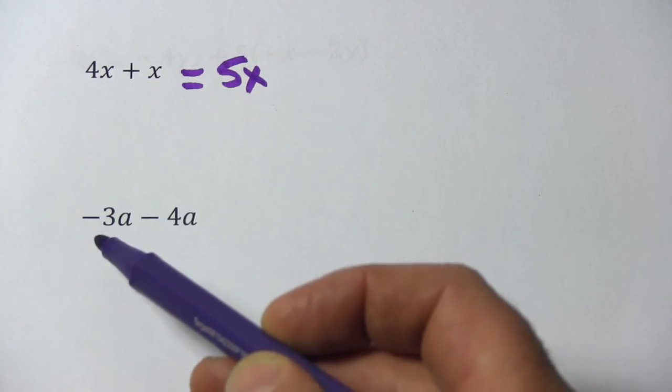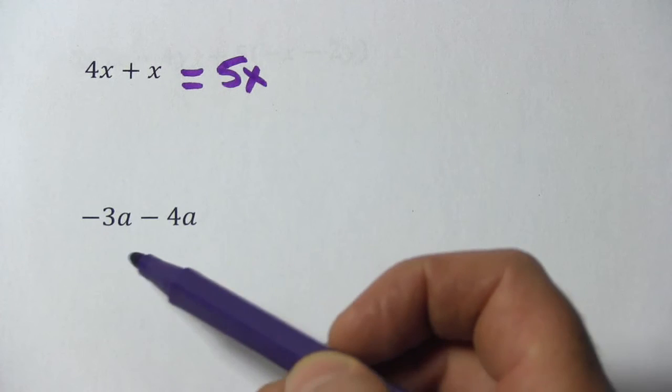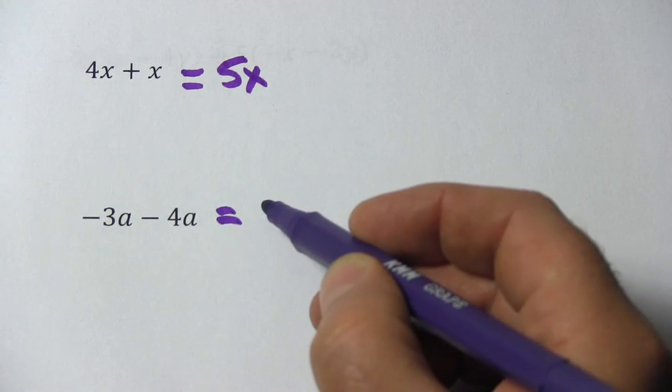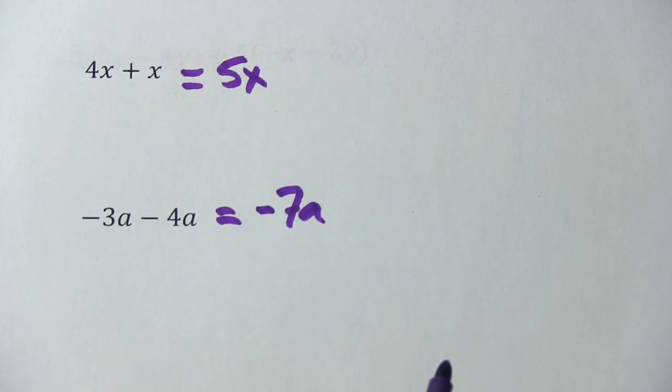They both have a as the variable, so these are like terms. And we've got negative 3 minus 4, so we'll do that subtraction. Negative 3 minus 4 is negative 7, so this is negative 7a. So that's a little bit of work with combining like terms.